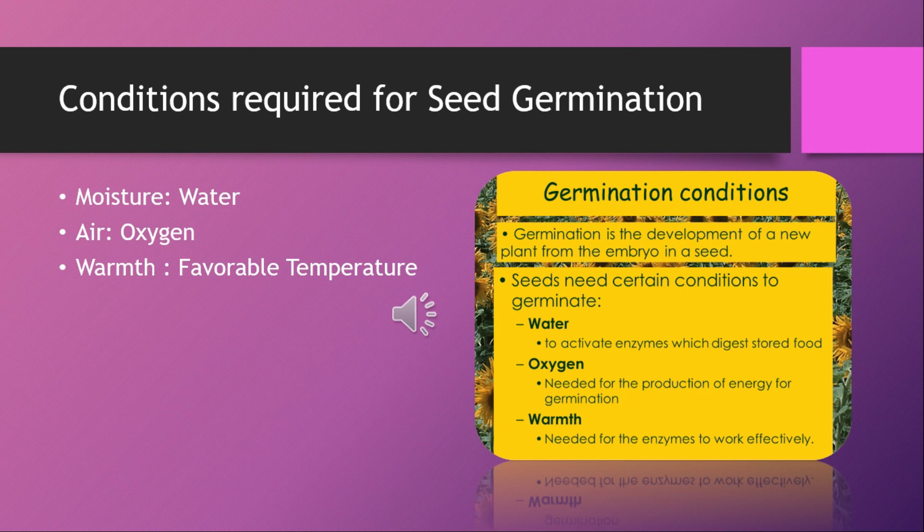Seeds of summer plants like rice, maize, and millet grow in a temperature range of 25 to 40 degrees Celsius. Seeds of winter plants like wheat, gram, and bean germinate in a temperature range of around 10 degrees Celsius.